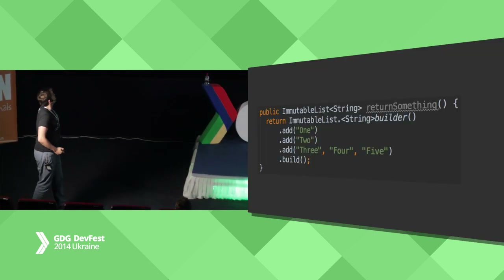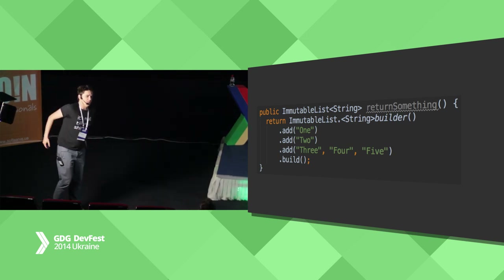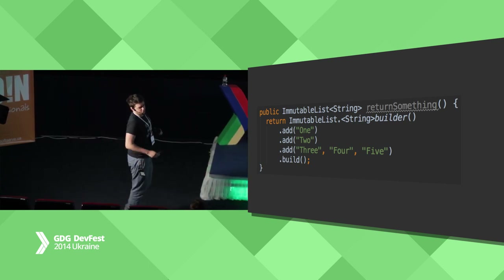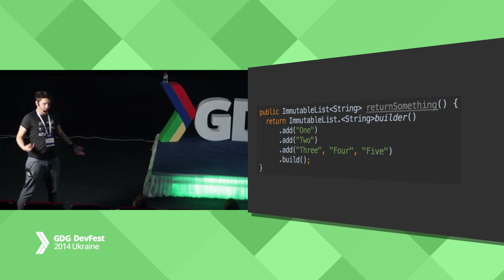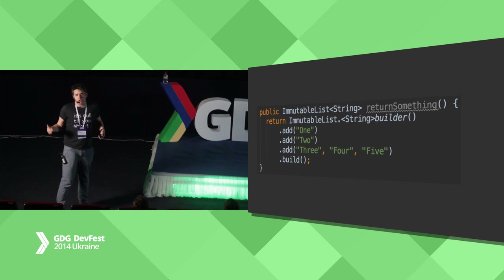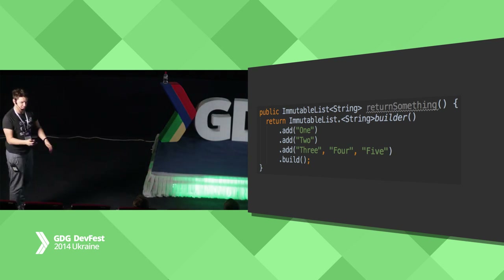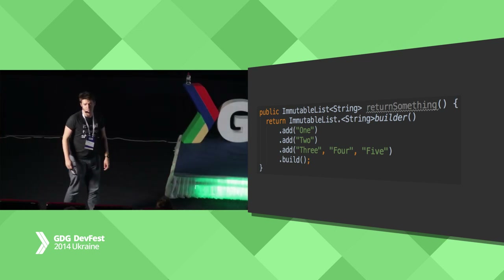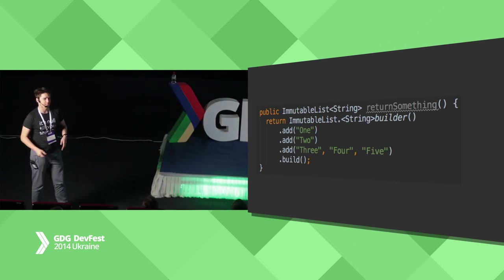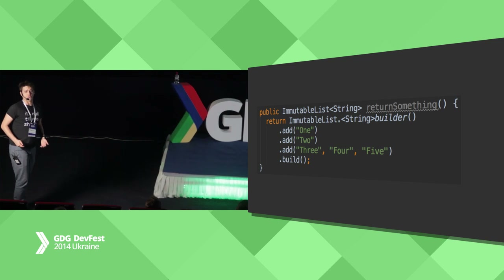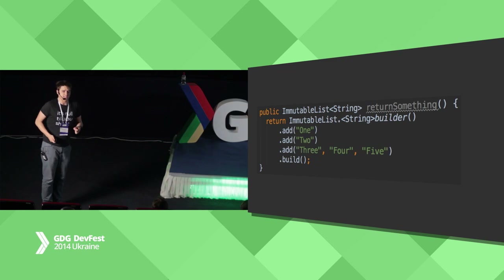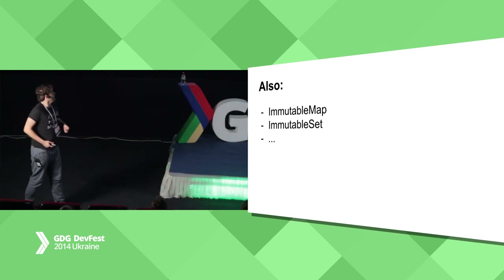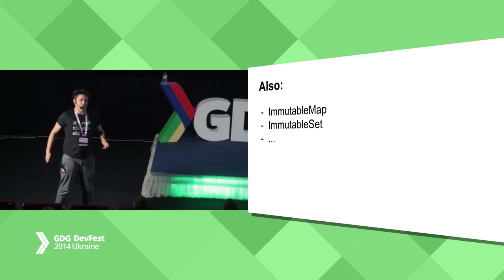An ImmutableList in Guava looks like this — you get the builder, fill it with some values, execute the build method, and it's done. This list cannot be changed using the list methods. Of course in Java, the List interface has methods like add, addAll, clear, and so on — unlike Scala where there is a different interface for immutable collections. But in this implementation those methods just throw UnsupportedOperationException. So after putting that list into some method that does crazy things, you will see the UnsupportedOperationException right away. And there are other implementations too: ImmutableMap, ImmutableSet — basically immutable everything from the Java collections.